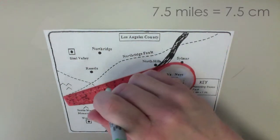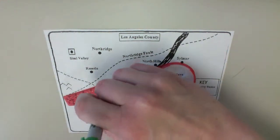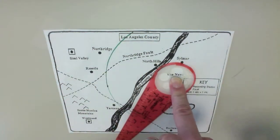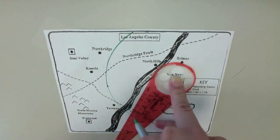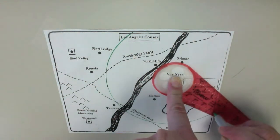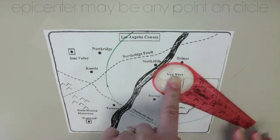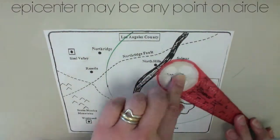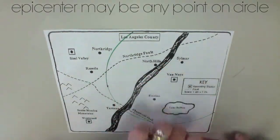Using your compass, you're going to use that radius to create a circle that has a radius of 7.5 centimeters. The epicenter could be at any point on that circle.